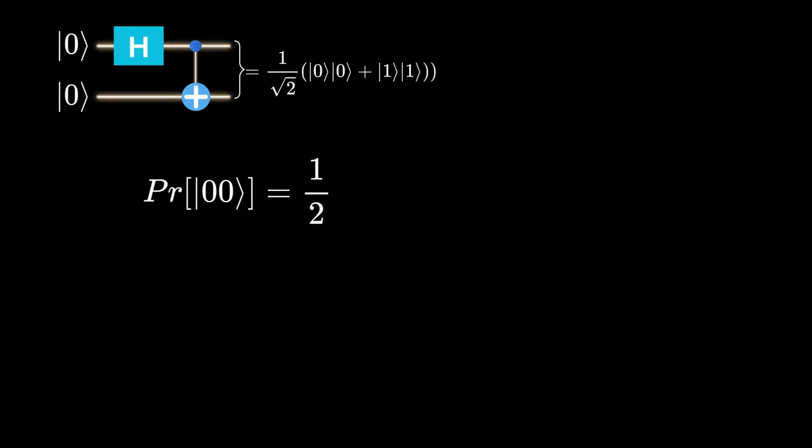In the case of an entangled pair of qubits, you will discover an interesting phenomenon that the chance of both qubits being in the state 0, 0 or 1, 1 is exactly 50% each.